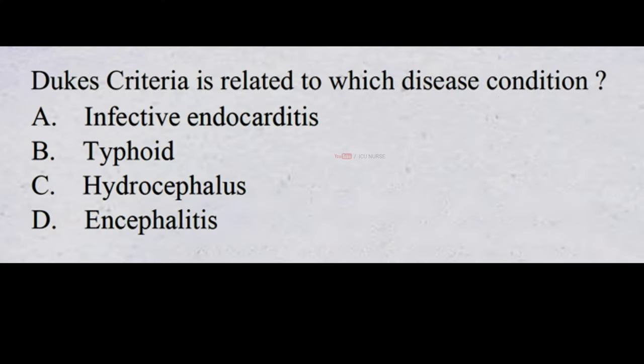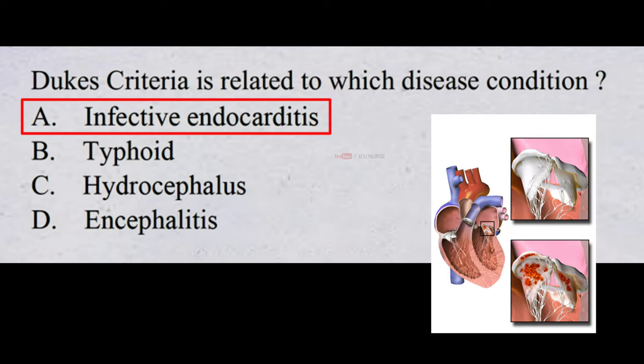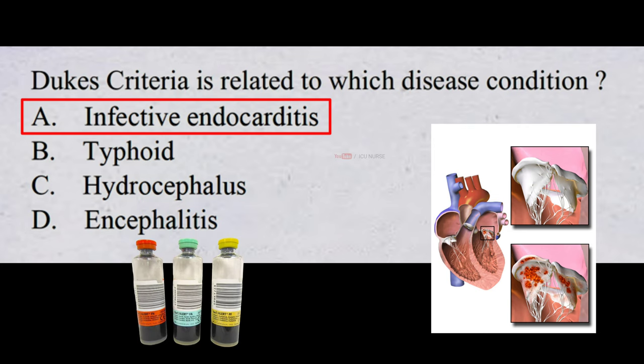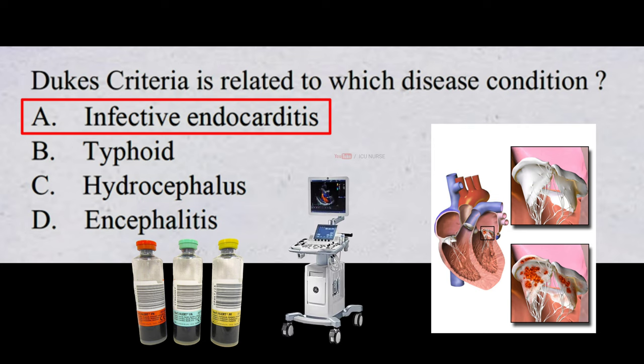Duke's criteria is related to which disease condition? A. infective endocarditis, B. typhoid, C. hydrocephalus, D. encephalitis. Duke's criteria are used to confirm or rule out endocarditis. Positive blood culture results for infective endocarditis and evidence of endocardial involvement from echocardiography are the two major Duke's criteria.